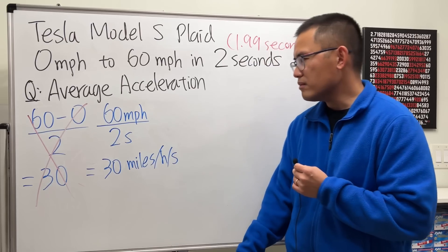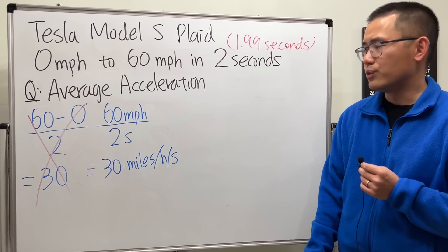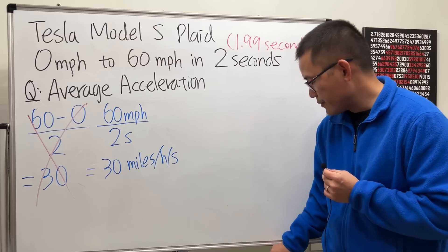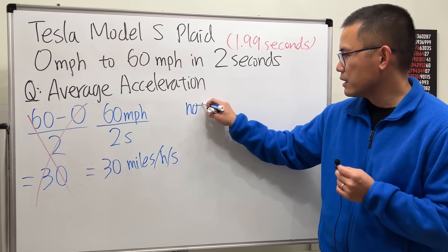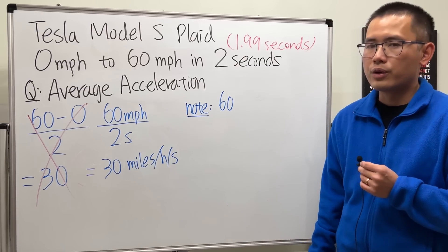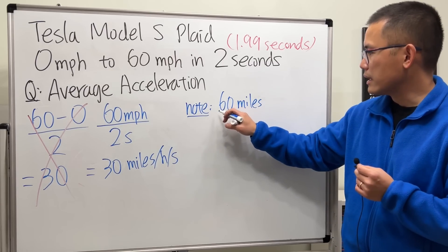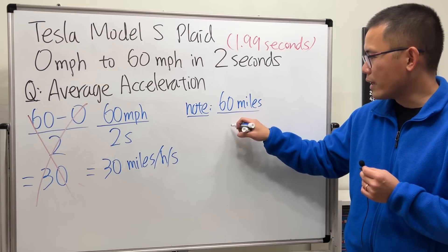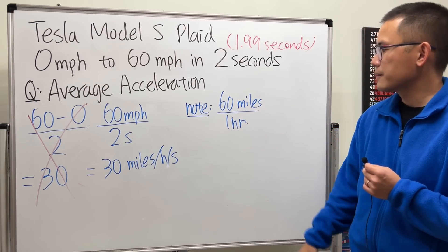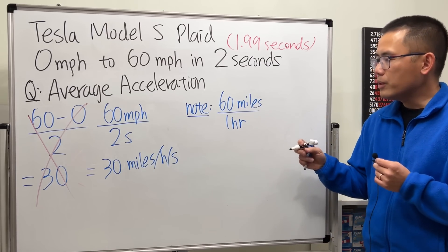Usually we want to have the units match: if this is hour that should be hour, or if this is second that should be second. So this is what we are going to do. First right here we are going to convert 60 miles per hour. And the mile is like this right, miles per hour is like miles per one hour like that. So I'm going to change this to something over seconds.